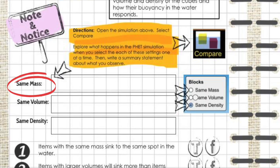Here you need to write a note and notice statement about something that you discovered of items of the same mass when they're placed into a container of water.